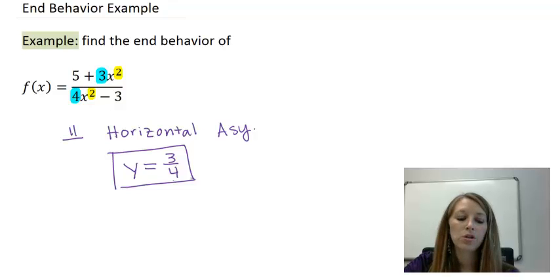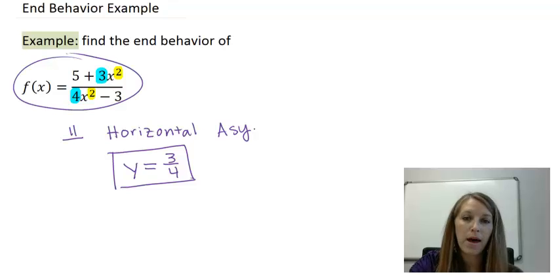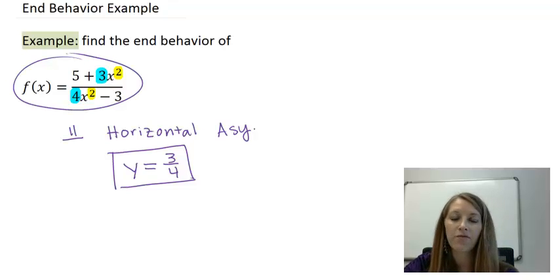This is where I'm going to stop this video. In the next video, I'm going to put all of these together in this specific example: my y-intercept, x-intercept, vertical asymptote, horizontal asymptote. And I'm actually going to sketch this graph, utilizing all of the information that I found in the last couple of videos.